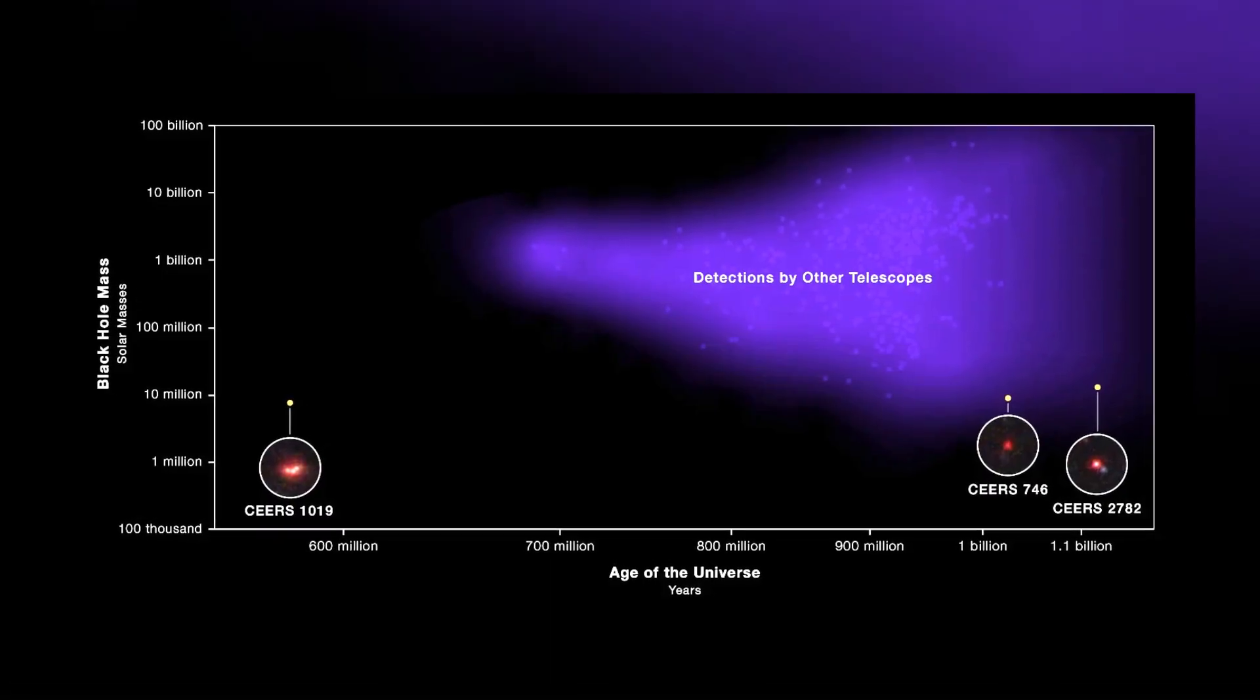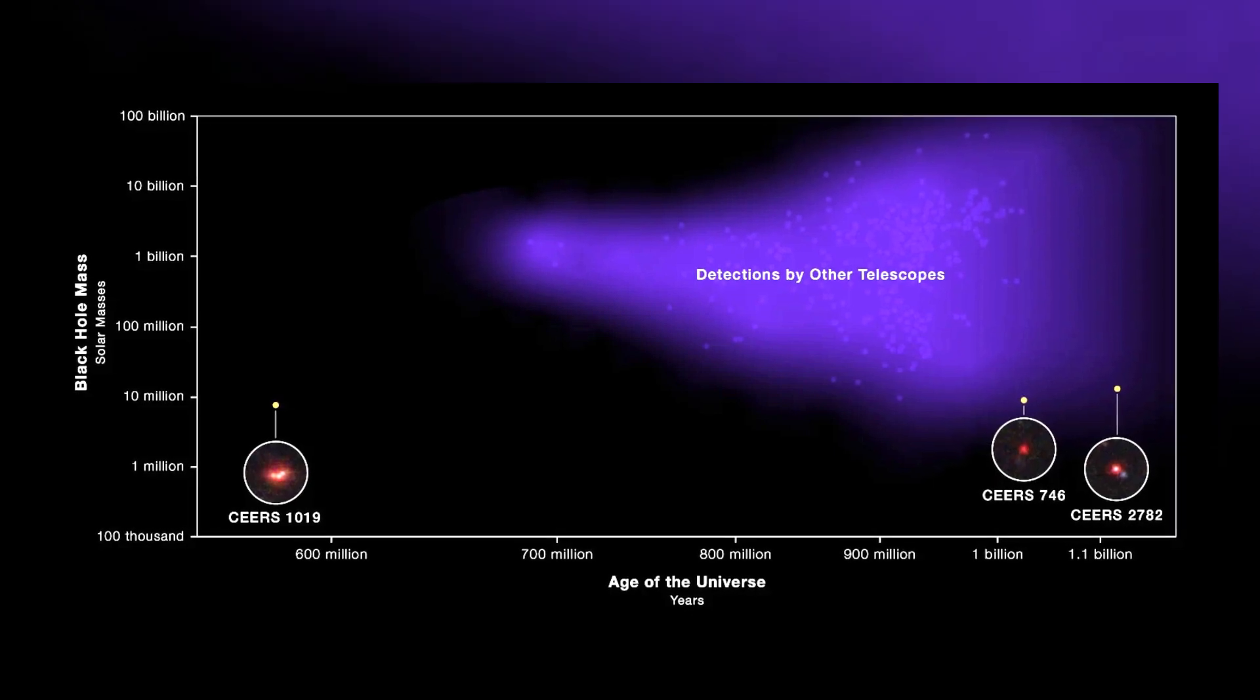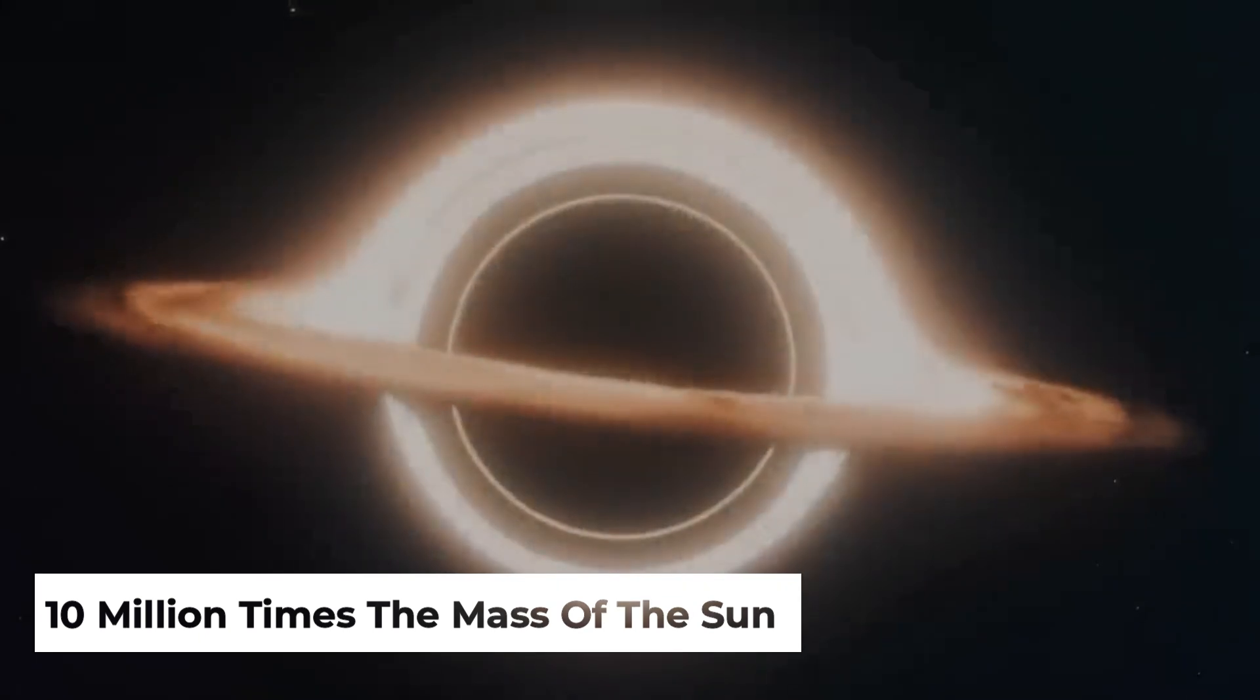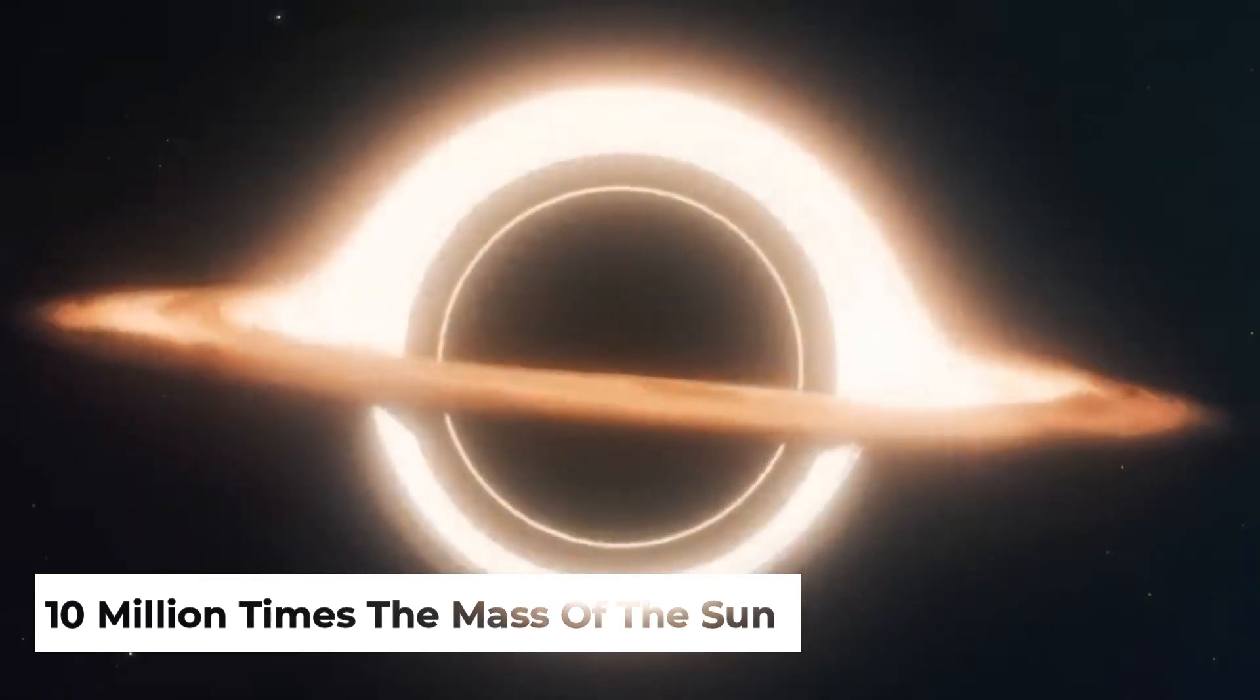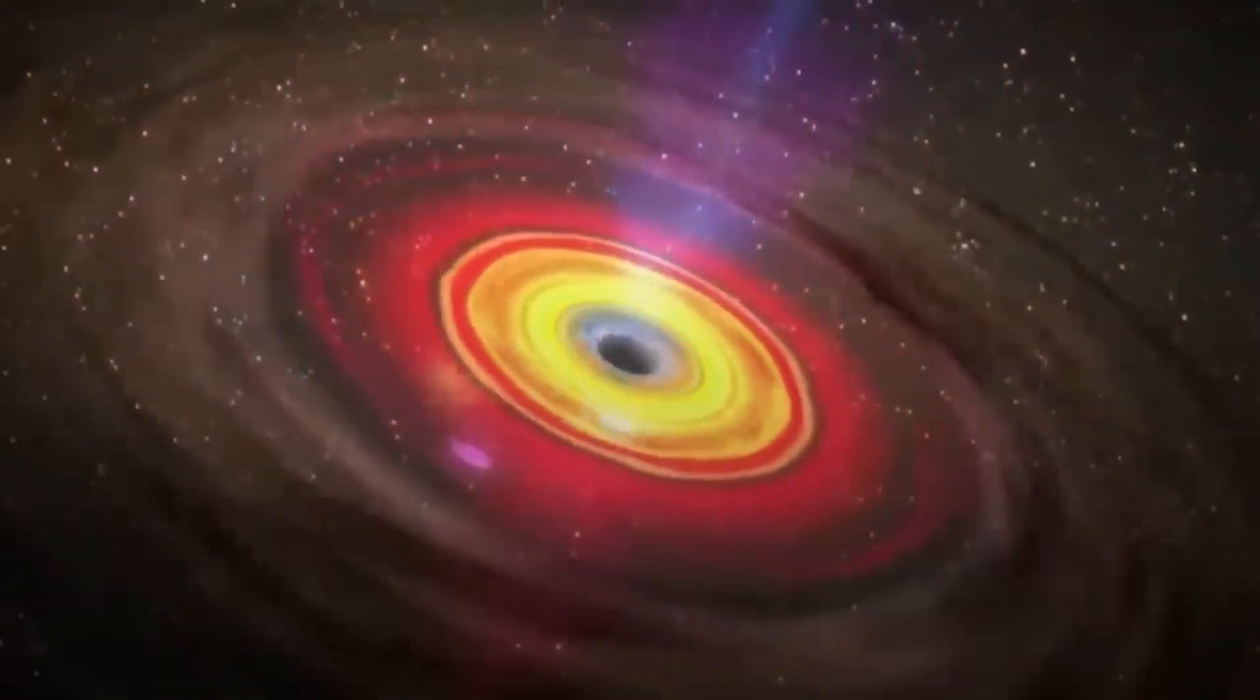Another pair of small black holes were quickly spotted in the data within the galaxies CEERS 2782 and CEERS 746. These black holes are only about 10 million times the mass of the Sun, further supporting the idea that smaller black holes must have existed earlier in the universe.